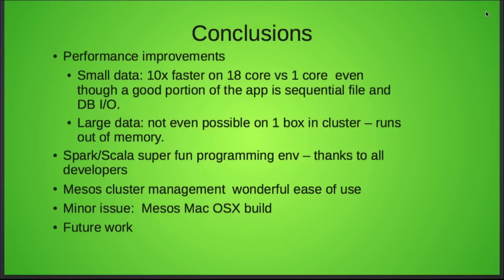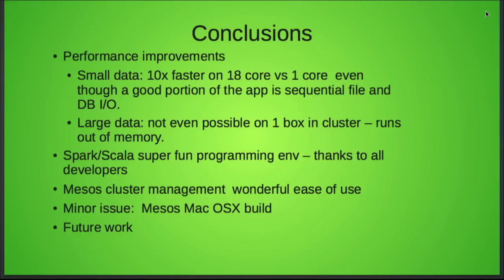In conclusion, the performance improvements with using Spark and Scala were really great. Just using a small test data example, I got about 10 times speedup on 18 cores over one core, even considering that a significant part of the application is starting up and reading Oracle, which is obviously sequential. With the large production data, it's not even possible to run it on a single box, and that's where Spark and Scala are a really big win for us. It's a great programming environment, and Mesos as well is doing a great job partitioning and running every night — it's been running for a couple months and I've never had it crash.